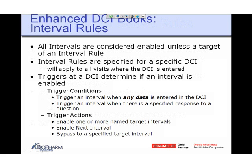Interval rules: all intervals are considered enabled as a target of an interval rule. Before you enter any data or create any rules, the book acts like a regular non-flex study — everything is expected, all visits are there, all forms are there. Interval rules are then specified for a specific DCI, and you apply that to all visits where that DCI is entered. The rule specifies whether the interval is enabled or not. If enabled, the visits appear; if not enabled, they do not appear.